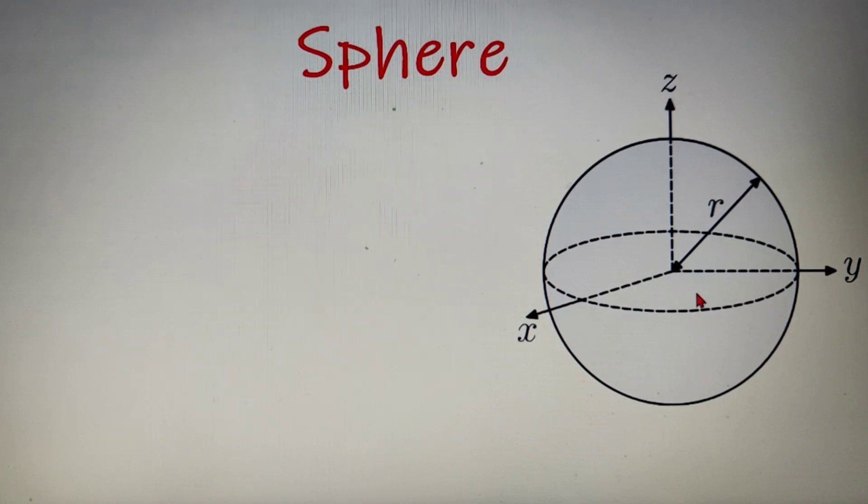If I take the center of the sphere as c, then the distance between c and any point that lies on the boundary of the sphere is called the radius of the sphere and it is generally denoted by the small letter r.